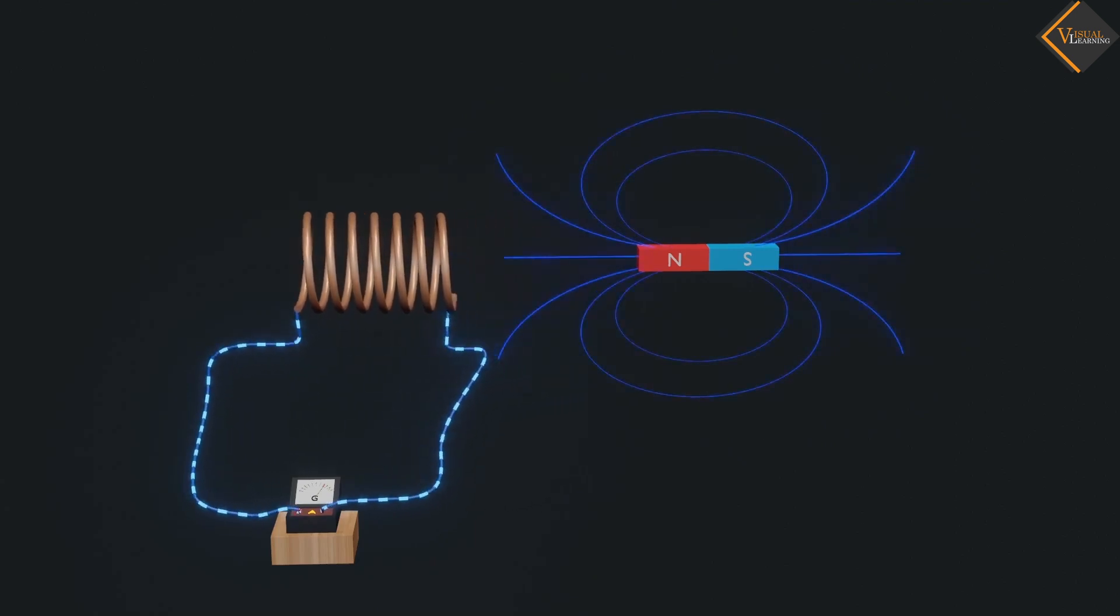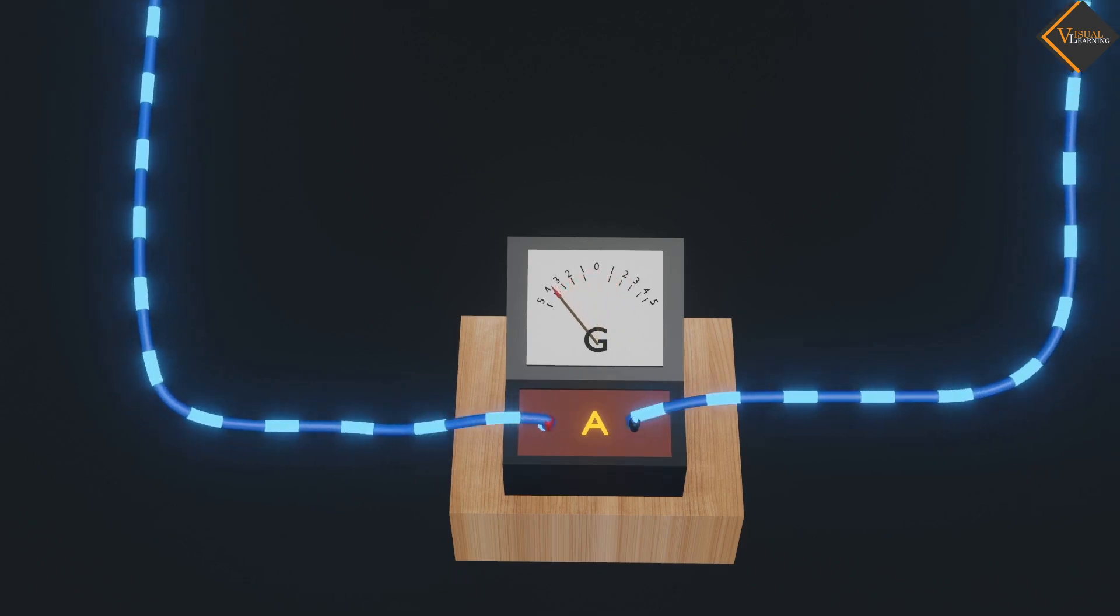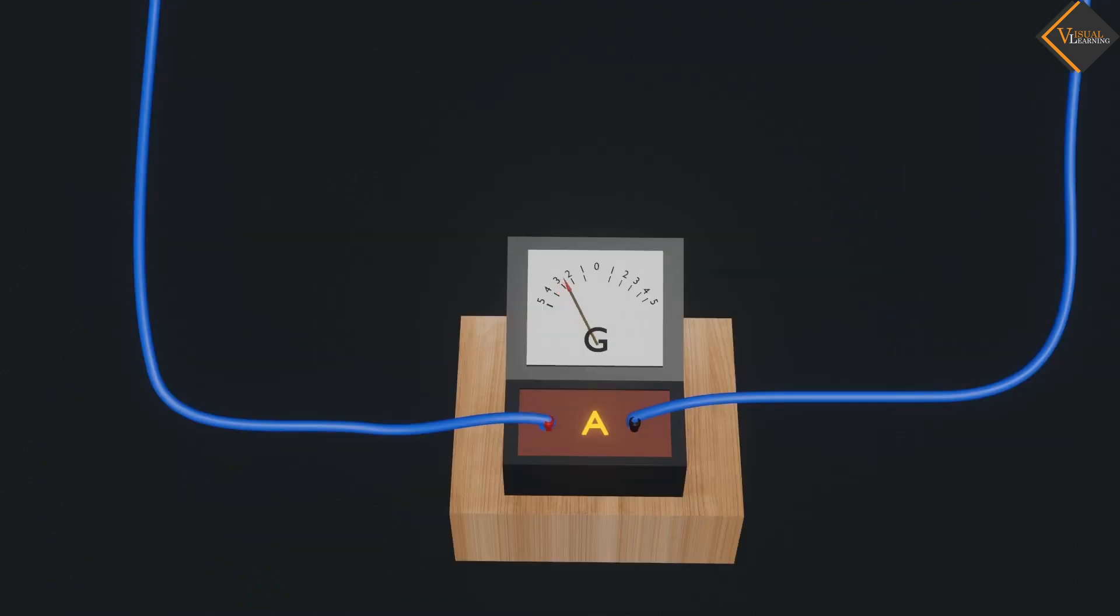Move the coil away from the bar magnet. The needle moves toward left. We see that when the coil is kept stationary with respect to the bar magnet, the deflection of the galvanometer drops to zero.